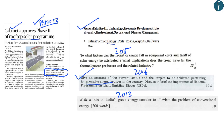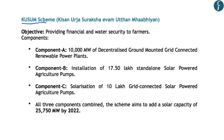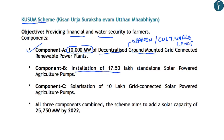Let us understand the salient features of the KUSUM scheme. Its basic objective is providing financial and water-related security to farmers. It has three main components. The first is 10,000 megawatts of decentralized ground-mounted grid-connected renewable power plants, which can be set up by farmers, cooperatives, panchayats, or farmer producer organizations on their barren or cultivable lands. The second component involves installation of 17.5 lakh standalone solar-powered agricultural pumps, where individual farmers will be supported to replace electricity-driven pumps with solar pumps.